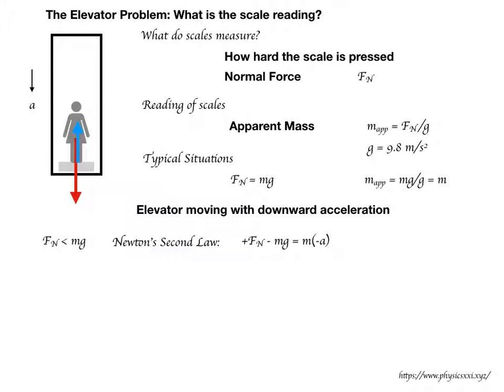The situation is fairly simple since all vectors are aligned in the vertical direction. I consider the normal force component positive (pointing up), and the acceleration and gravitational force components negative (pointing down). Newton's second law gives us: the normal force minus mg equals m times (negative a). Note that forgetting the minus sign here is a very common mistake — the acceleration vector points downward on the diagram, so it has a negative vertical component, which is why we must include that minus sign.